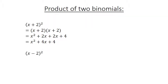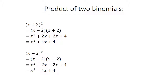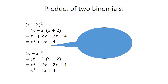Now we have (x minus 2) squared, which equals x squared minus 2x minus 2x plus 4, equals x squared minus 4x plus 4. Can you see the difference? Only the signs differ.